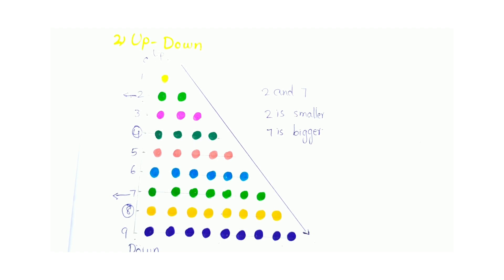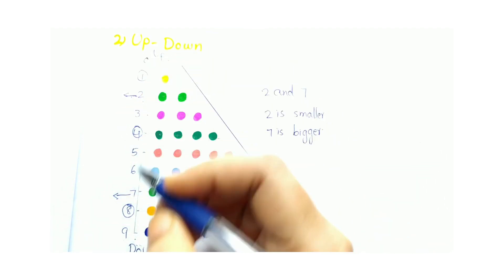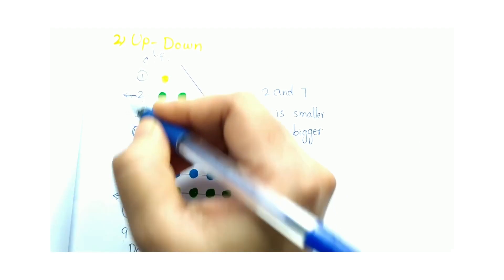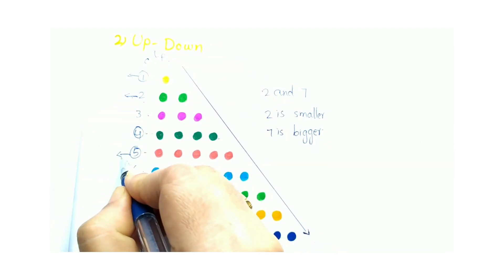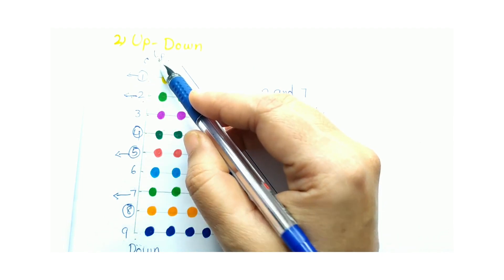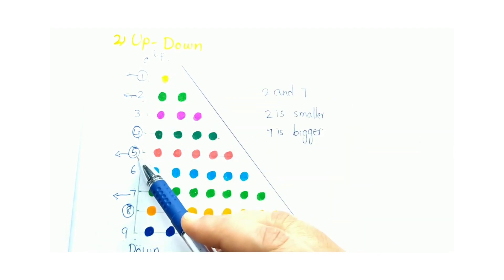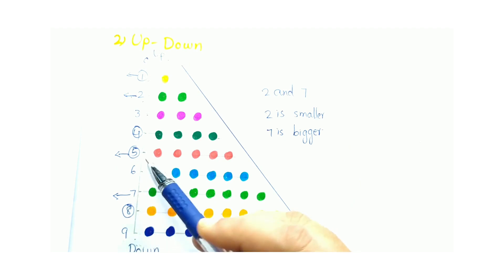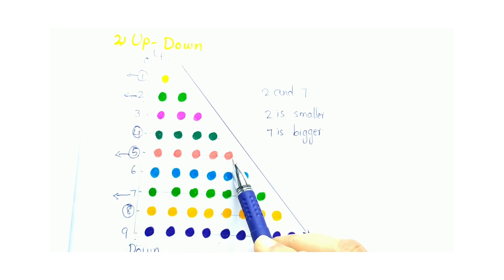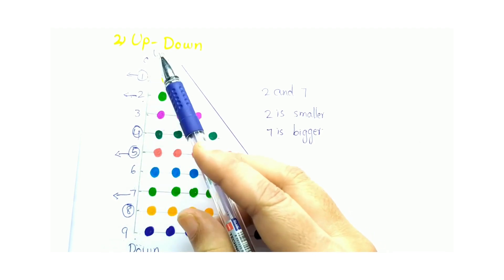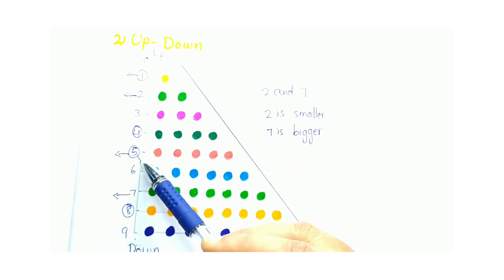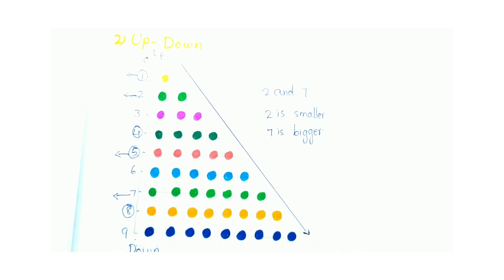Let's take 1 and 5. See, 1 is here and 5 is here. The number which is on the upside is small — 1 is small. The number on the downside, 5, is the bigger number. So in 1 and 5, the upside number 1 is smaller and the downside number 5 is bigger. When taking two numbers, check the upper number and the downside number — the upside number is the smaller and the downside number is the bigger.